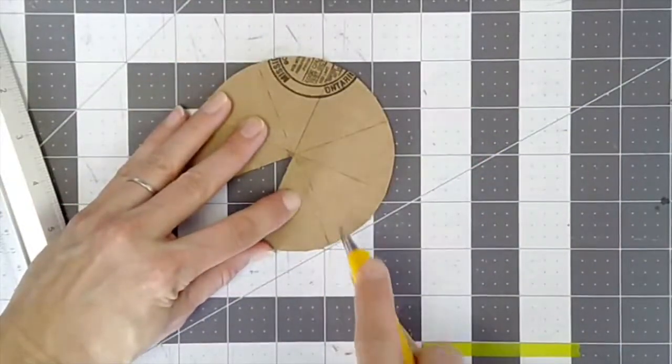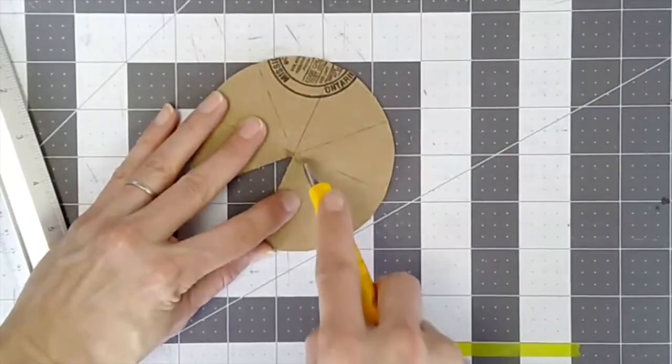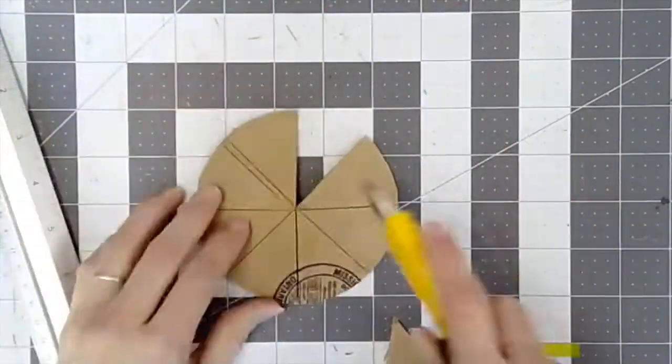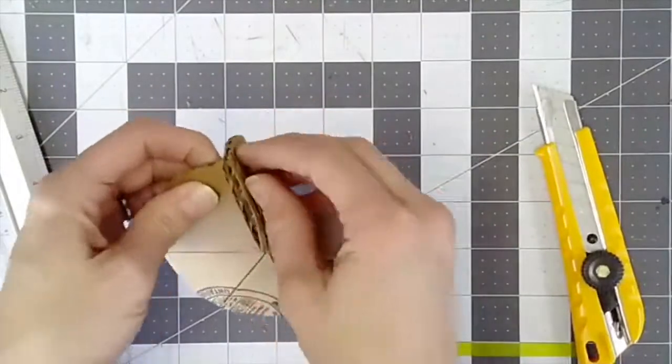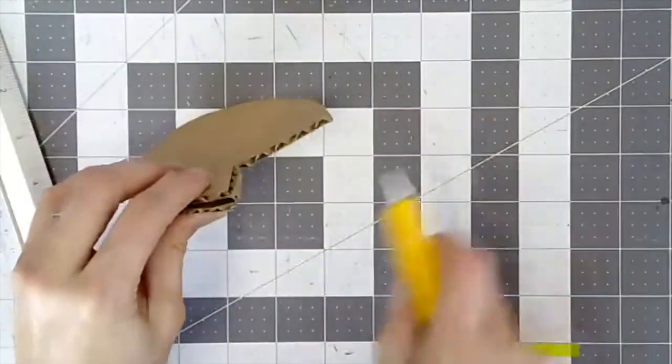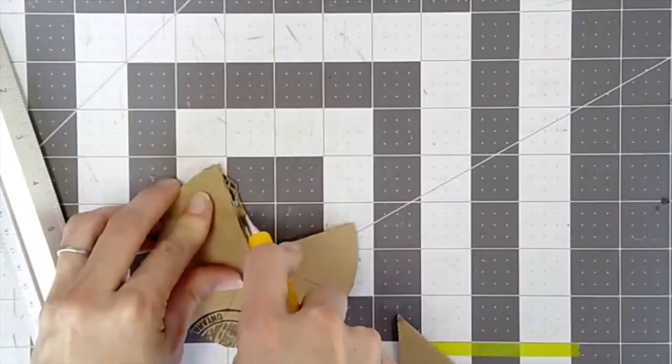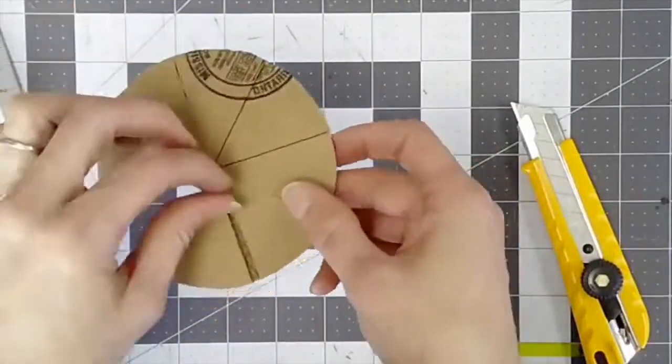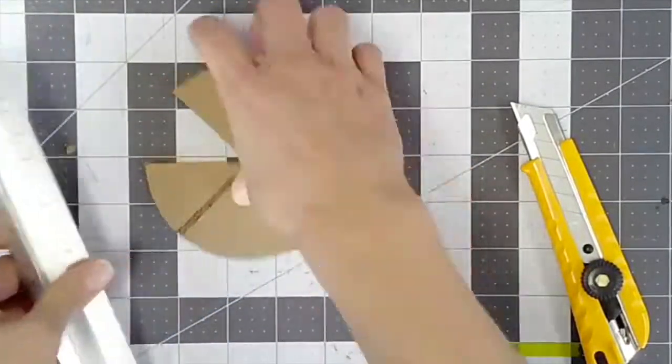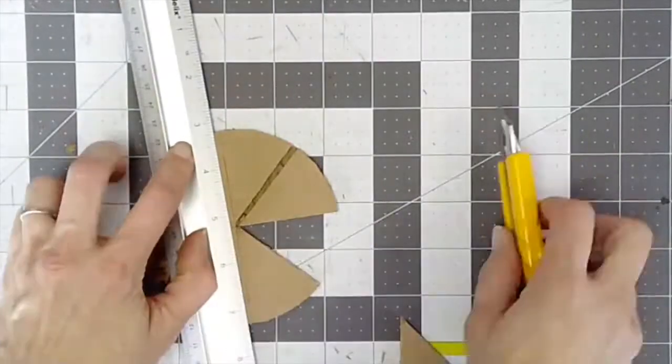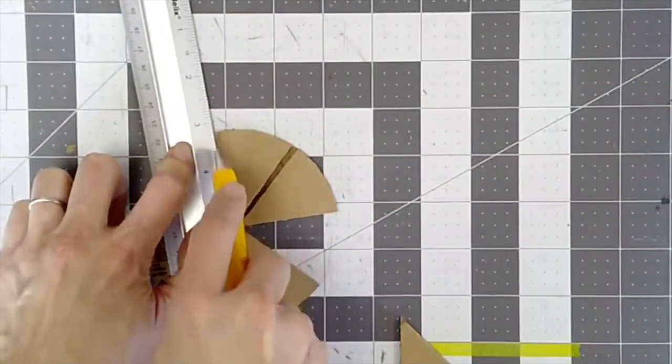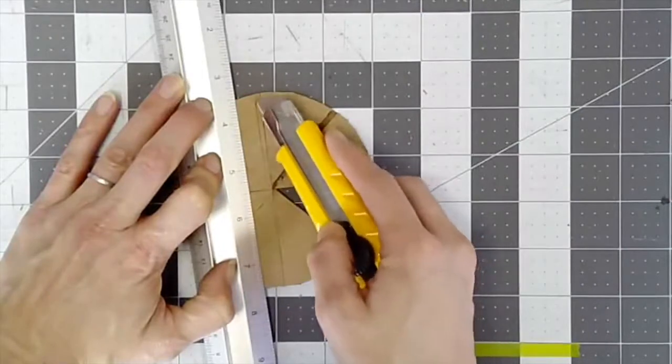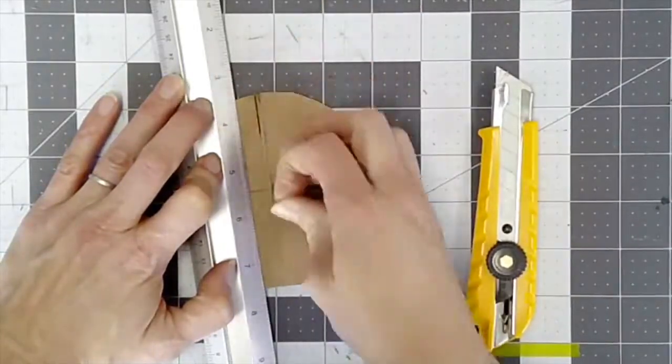Remove one triangle from the circle to create space to bend the circle into a cone. The circle will bend backwards with the scored lines exposed. To have the scored lines inside of the circle, cut a quarter inch between each of the triangles. This allows the cardboard to bend the opposite way. This method can be applied to any of the scoring techniques, including the cylinder if the exterior of the cylinder is preferred to have the scored lines on the inside.